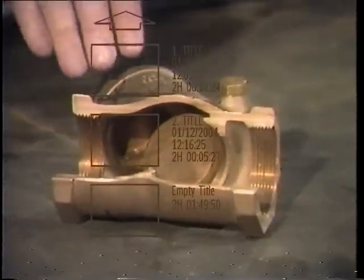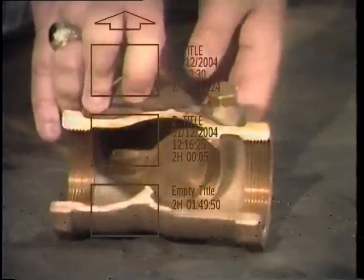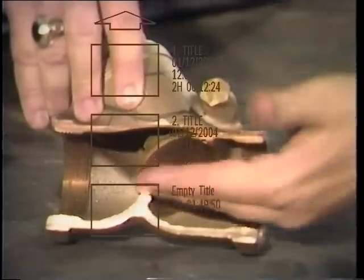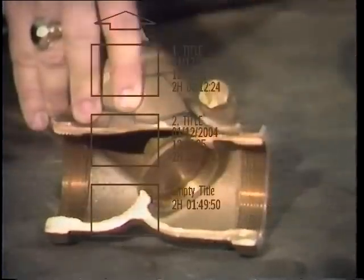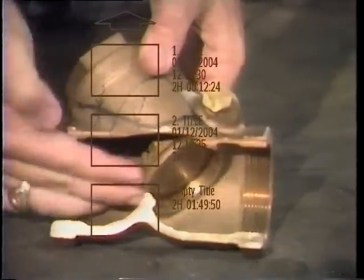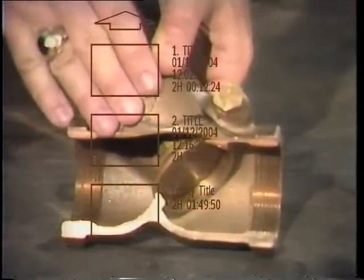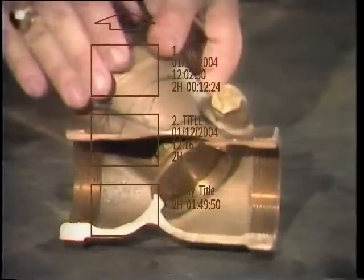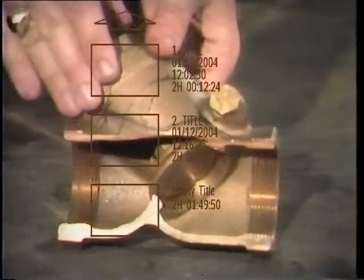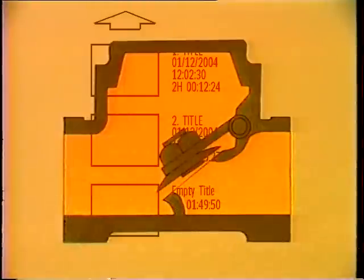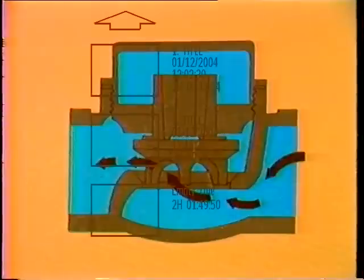There's one more basic valve design to talk about before we break: the check valve. A check valve will permit flow in one direction only — it is designed to prevent any backflow of fluid within the piping. However, most check valves cannot be used as stop valves; most will only close if the flow stops or if for some reason tries to reverse its direction. There are three basic types of check valves: the swing, the lift, and the stop check.